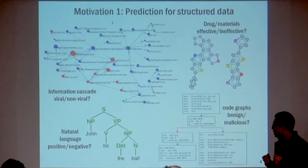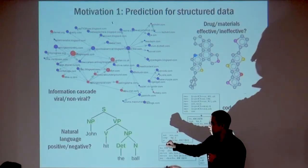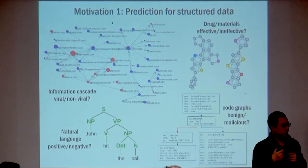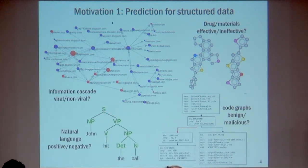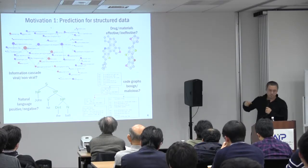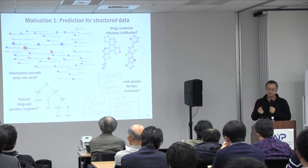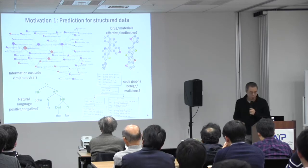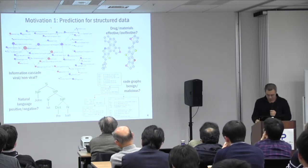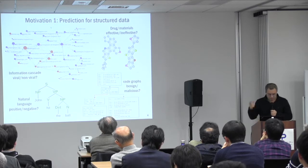You might have NLP problems where you do sentiment analysis using parse trees to describe sentences. In program analysis, people represent programs as graph structures describing how different parts relate to each other, and you might want to classify whether a program is malicious based on the contents of each block and how they depend on each other.